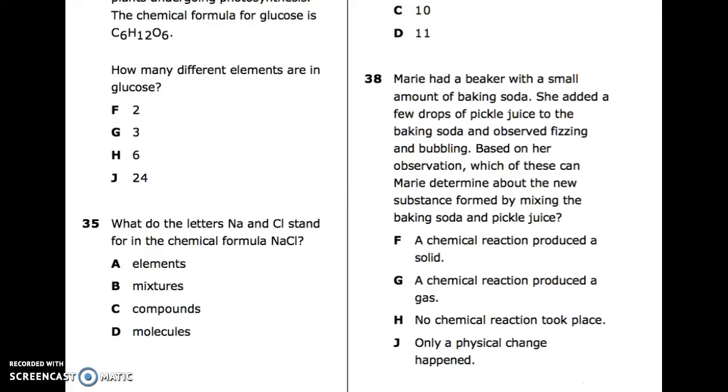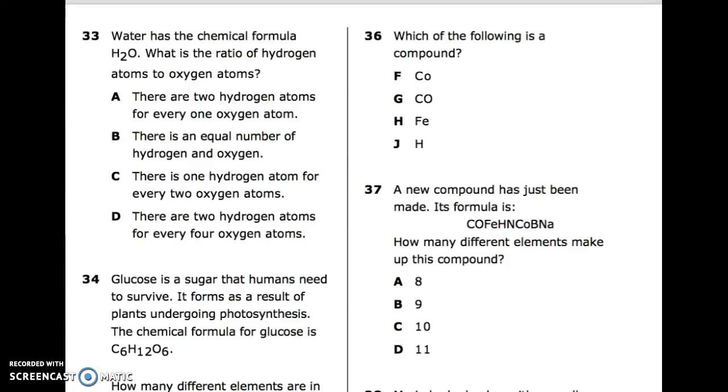35: What do the letters NA and CL stand for in the chemical formula NaCl? A. Elements. B. Mixtures. C. Compounds. D. Molecules. 36: Which of the following is a compound? 37: A new compound has just been made. Its formula is COFEHNCOBNA. How many different elements make up this compound?